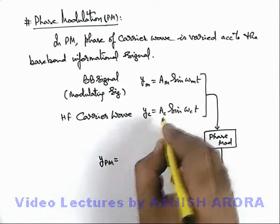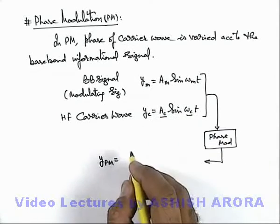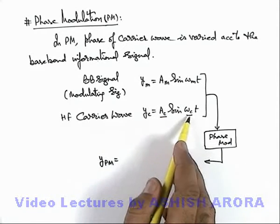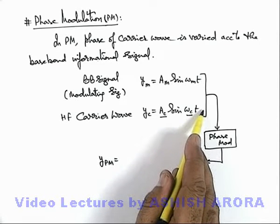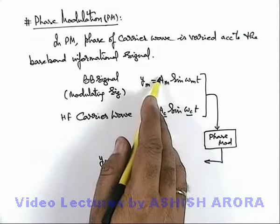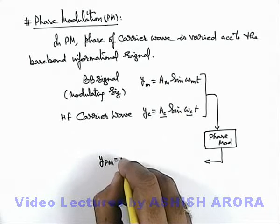In which the amplitude and frequency of the carrier wave remain same, but the initial phase which is considered to be zero, that will be modified with the baseband signal and it is written as